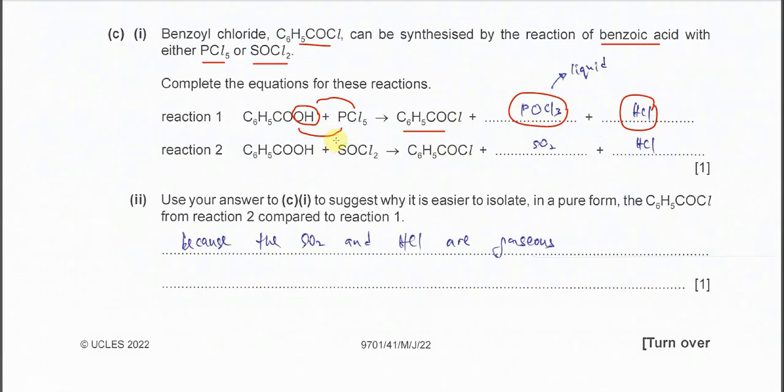Similar things happen for this SOCl2 with the benzoic acid. OH will be removed. The H will combine with one Cl here to form HCl. The O will combine with the S to form SO2. And one chlorine here will combine with the C to form the benzoyl chloride. So therefore it will form SO2 and HCl.